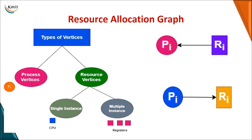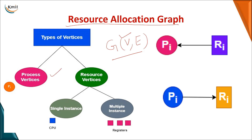The next topic in deadlock characterization is the resource allocation graph. A graph is a collection of vertices and edges. We have two types of vertices: one is your process and the other is your resource. A process is represented by a circle with the process name, whereas a resource is represented by a rectangle.